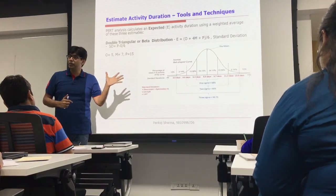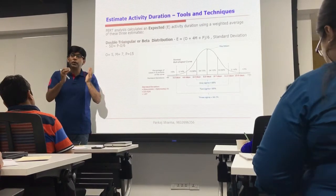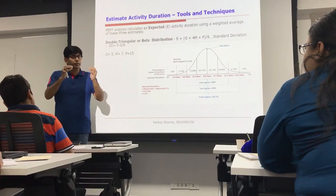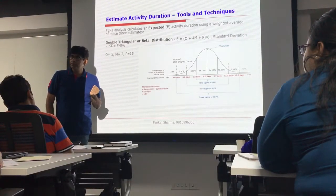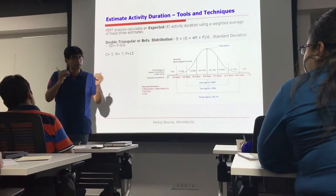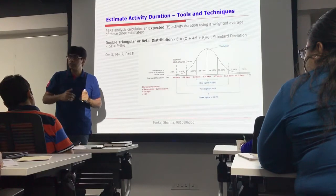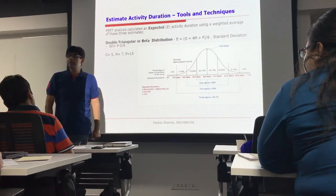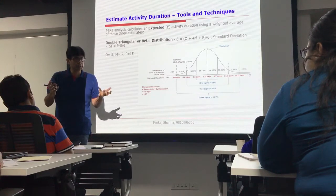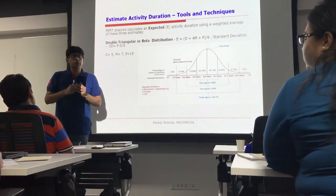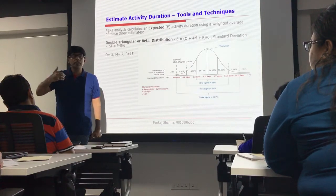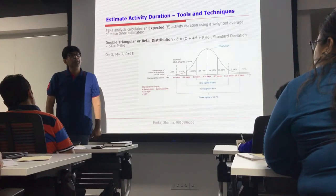Right now we will talk specifically about time. Based on the historical data you can find out which was the best case scenario — for example, which project was done in the least amount of time. We can also find out the most likely scenario — generally what it takes to complete the project, or maybe the average time. And we can also find out the worst case scenario. So we have three points: the best case scenario, also called optimistic; the most likely scenario; and the worst case scenario, also called pessimistic.